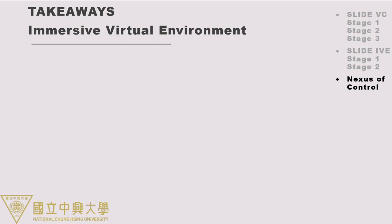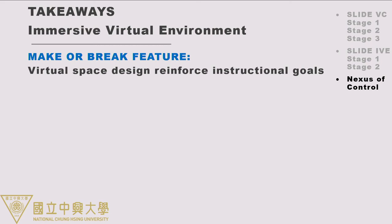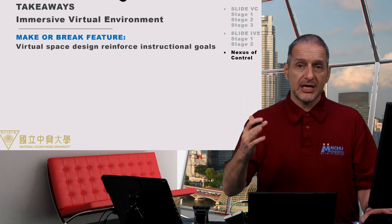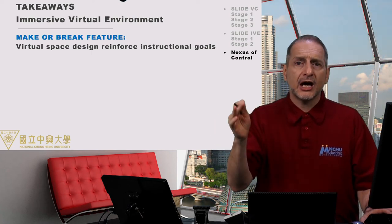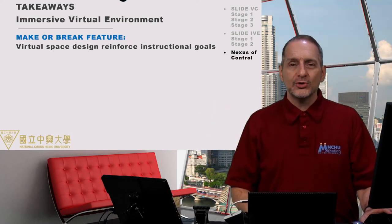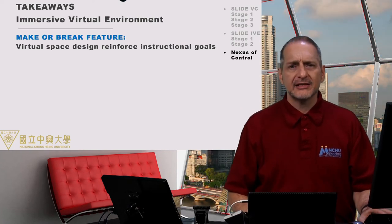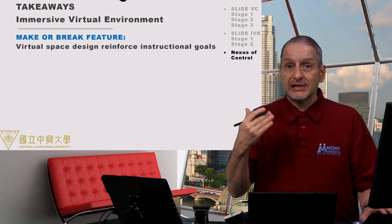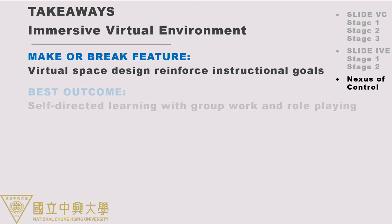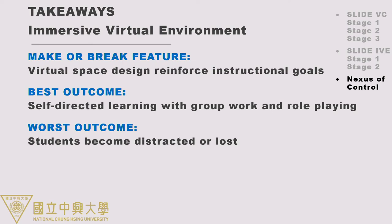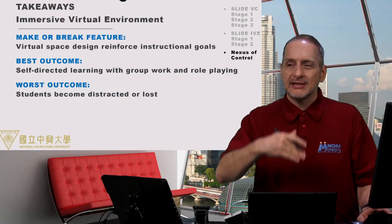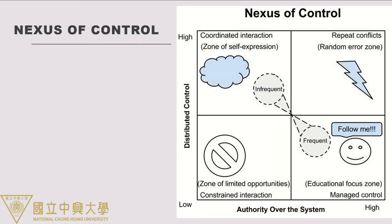For the immersive virtual environment, the main feature is a virtual space that reinforces learning goals. For a negotiation class, you can use buildings and offices that make you feel like you're there; for an information hunt, islands where people search; for group work, different breakout spaces. That virtual reality can really reinforce class goals, pedagogy goals, and help students with their learning. The best outcome is self-directed learning with groups and individuals in a role-playing way. The worst outcome is students becoming distracted or lost — because the environment is so rich, they go off in different directions.